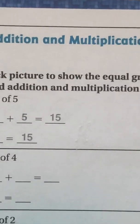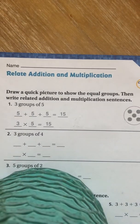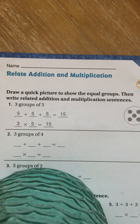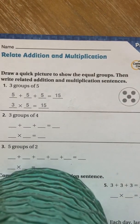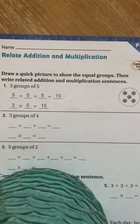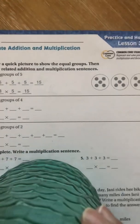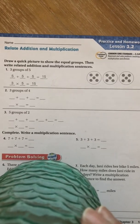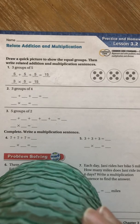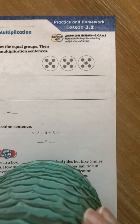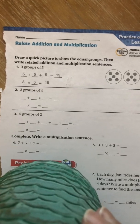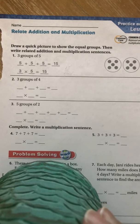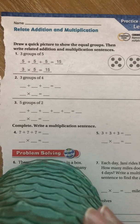At the top it says relate addition and multiplication. So number one, they did for you. It says draw a quick picture to show the equal groups, then write related addition and multiplication sentences. Here you can see the equal groups as a model, as a picture. Over to the right, you see three groups, five in each group. So they showed you as a related addition sentence: five plus five plus five equals 15. And then if we change it to multiplication, it's three times five, which is also 15.